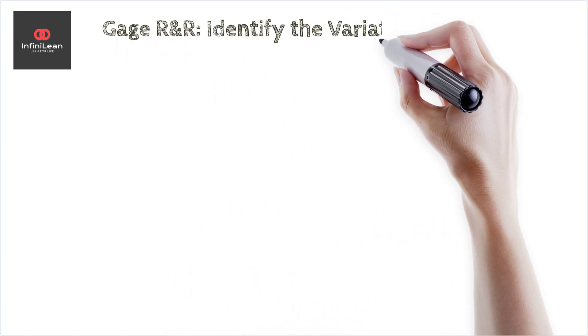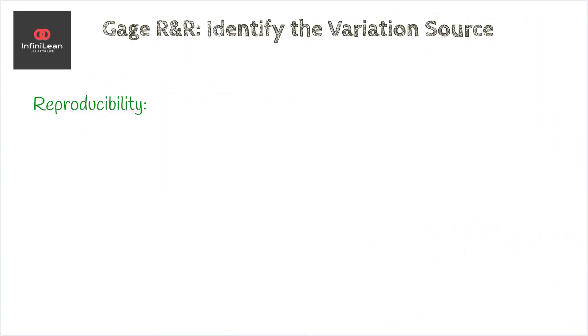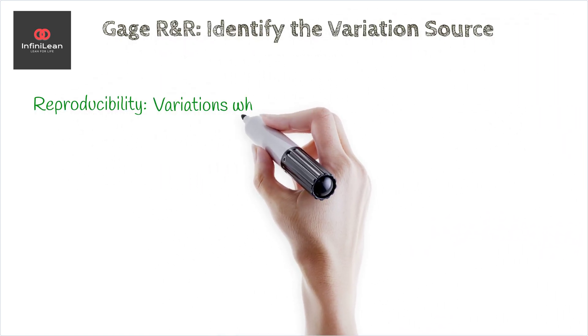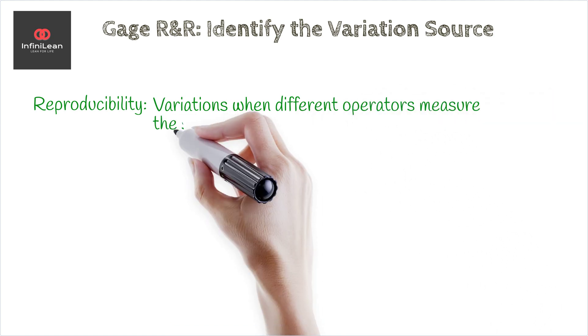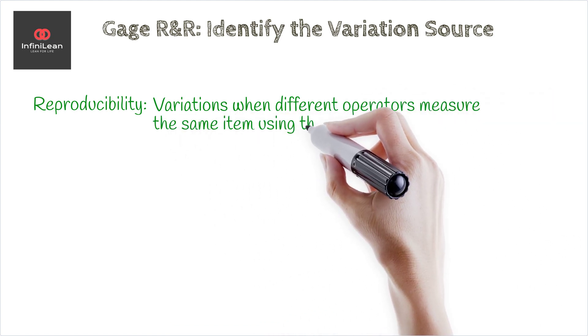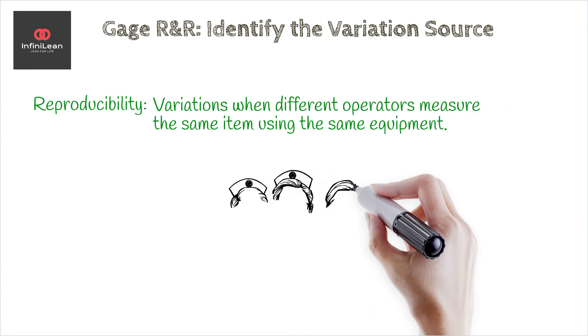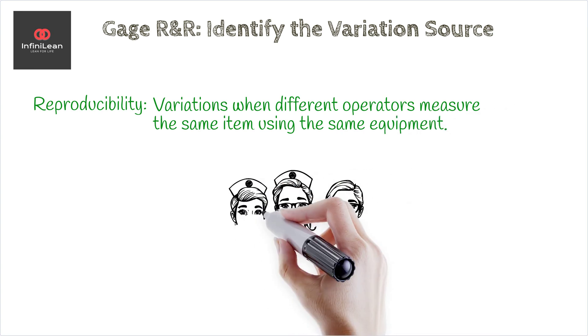Reproducibility, however, accounts for variations when different operators measure the same item using the same equipment. Assessing both factors is essential for a reliable measurement system.